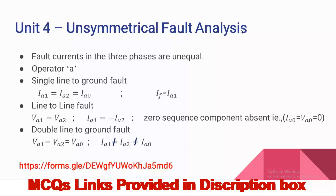Unit Four: Unsymmetrical fault analysis. An unsymmetrical fault means fault current in the three phases are unequal, so calculation is required for each phase separately. Using the symmetrical components method, operator 'a' denotes a phasor rotated in the anti-clockwise direction. For a single line-to-ground fault — the most frequently occurring fault at about seventy percent — the condition is that all sequence currents are equal: positive sequence equals negative sequence equals zero sequence current. The fault current is I-f equals 3 times I-a1 (any sequence current multiplied by three).